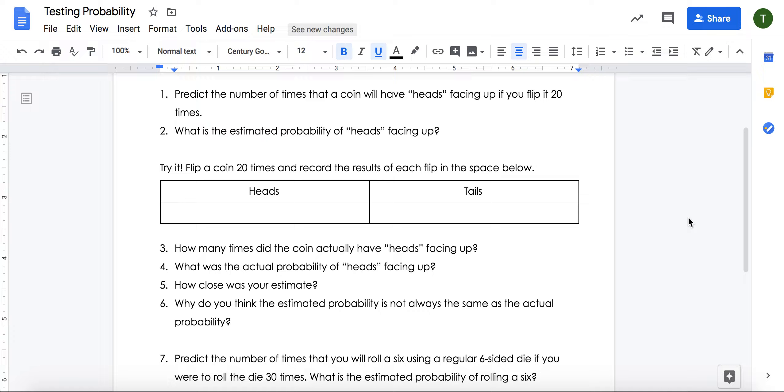So for example, you may have predicted one thing, but in your actual probability, your number of times that you flipped heads might be only 7. So if you had probability of heads facing up as 7, we would write that as 7 out of 20. It landed on heads 7 times, and we flipped the coin 20 times. Then decide how close your estimate was. And answer, why do you think the estimated probability is not always the same as the actual probability?